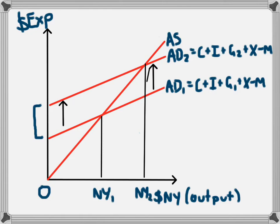We can see that there is a multiplier effect, that this distance here, the increase in government spending, is smaller than what we end up with the increase in national income. So the level of national income increases by more than what government spending increased by. This is called the multiplier effect.